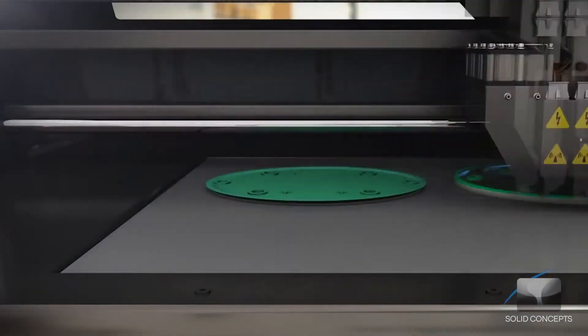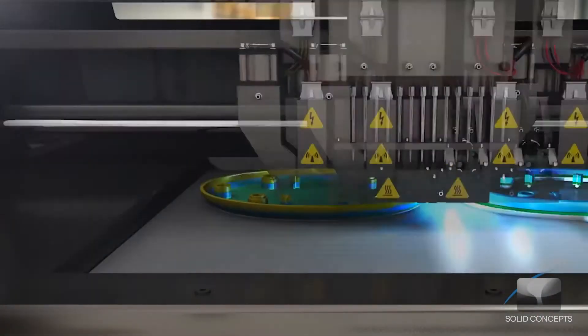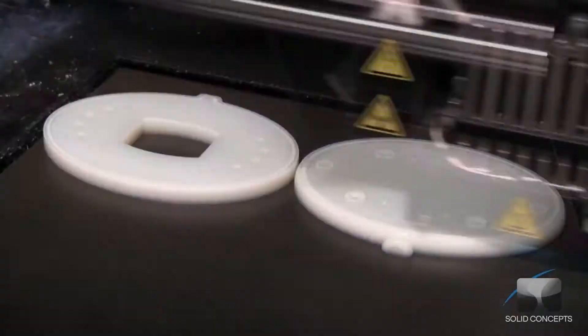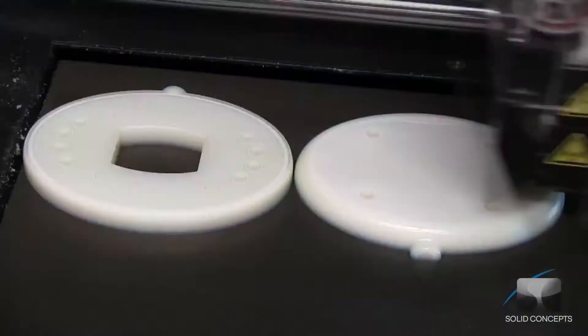Once a cross-section is complete, the build platform is lowered slightly to make room for the next layer. As the part is built, support material is added to give supplemental strength to fine structures and down-facing surfaces.